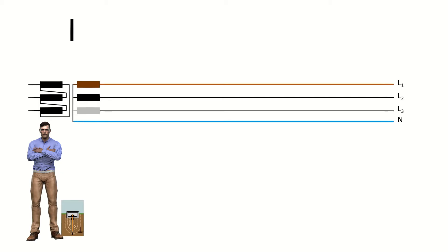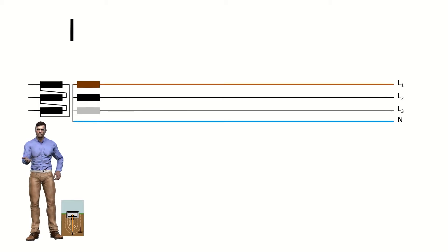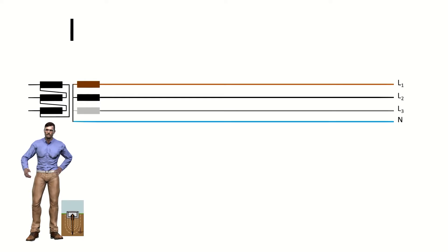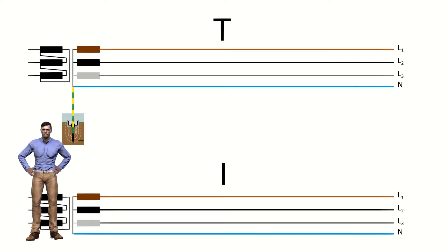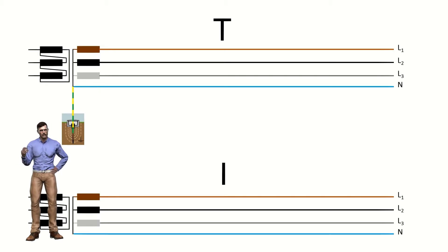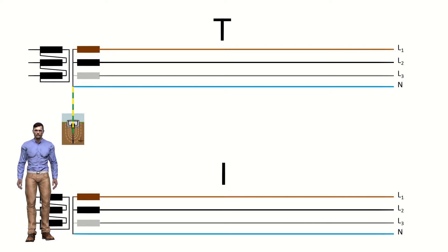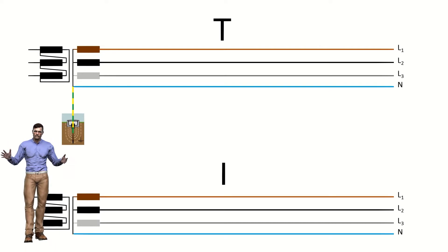We use the letter I if the active parts of the installation are isolated from ground, or if there is a connection point through a high impedance. Therefore: T if the power supply is grounded directly, and on the other hand I if it is connected with an impedance or isolated, that is, an infinite impedance. With this word game you can easily remember it.